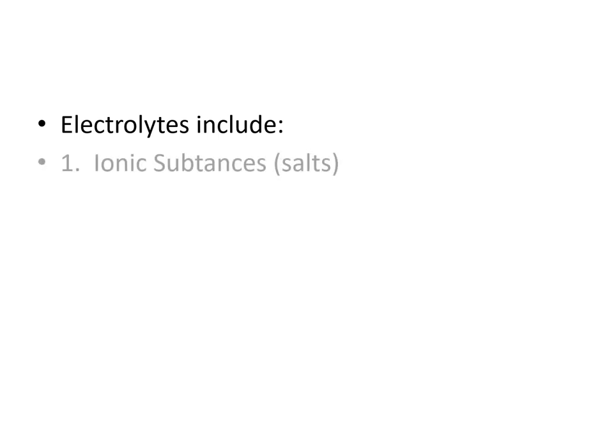Electrolytes include three major classes of substances. The first one is ionic substances, or salts — all ionic substances are electrolytes. They're not all great electrolytes, but they're all electrolytes. We also have acids and bases, and these are our three substances that are always electrolytes.